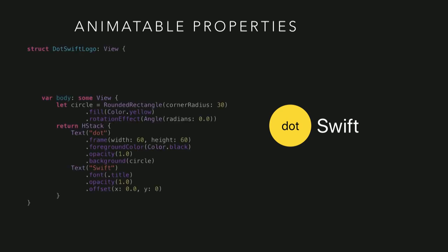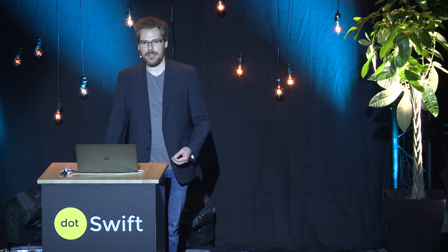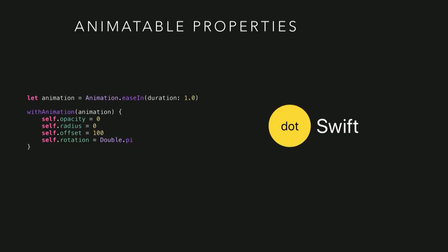Let's suppose that we have this completely random view, and this is its code. We have two text views, we have some yellow background, and we would love to animate it in some way. You can see that there are several constants set as the parameters in the view modifiers. It's important to realize that almost any such parameter is animatable in SwiftUI. So if we introduce variables instead of constants, and if we change these variables within the animation block, the view is suddenly alive and we are able to animate it.